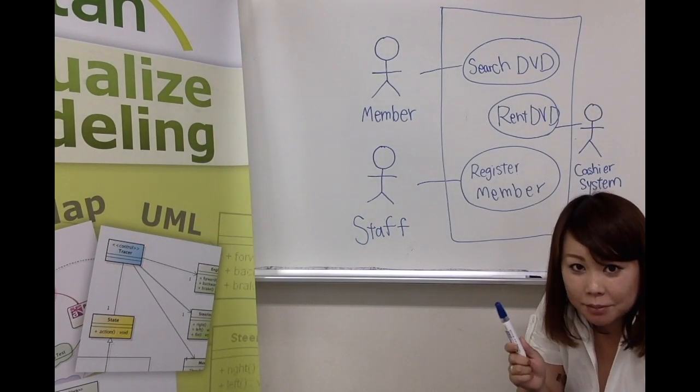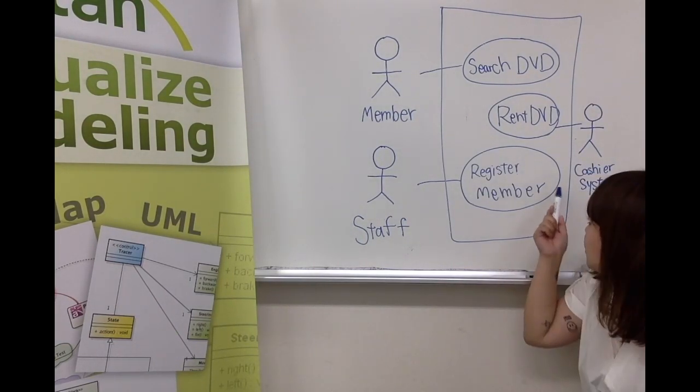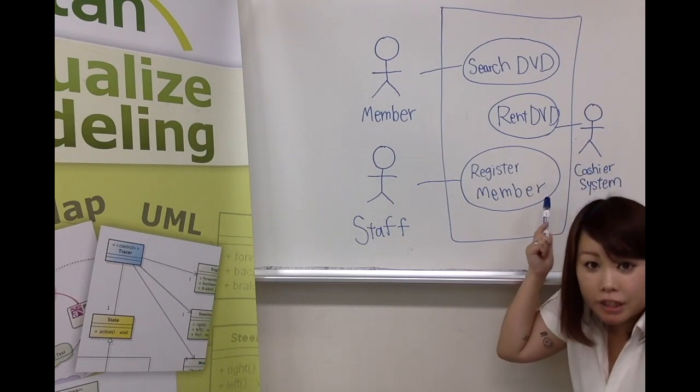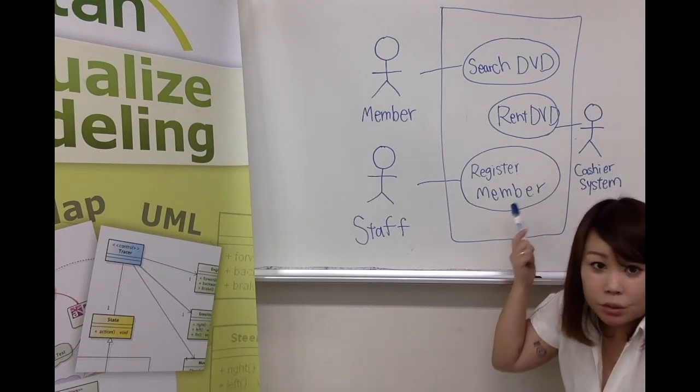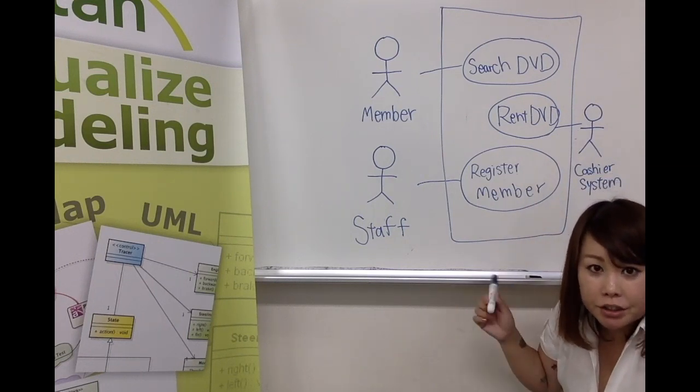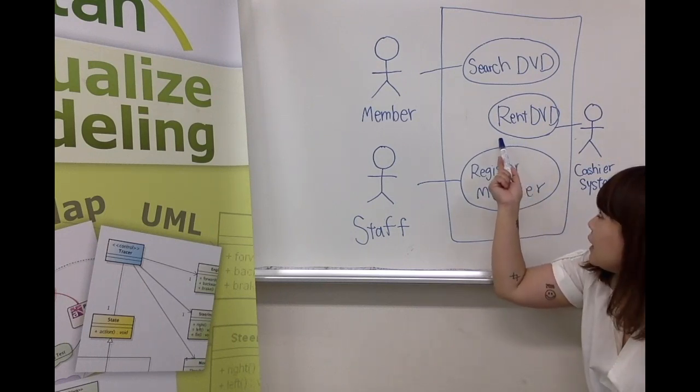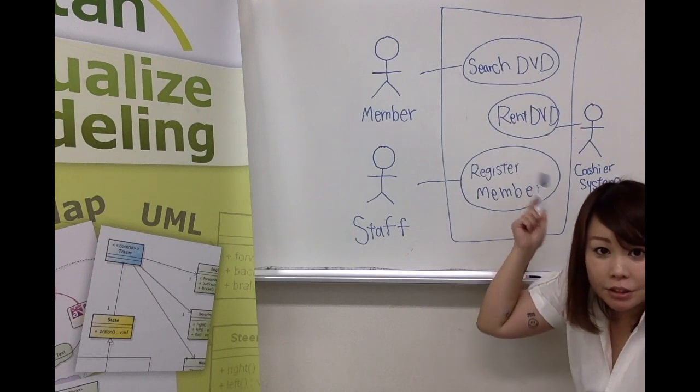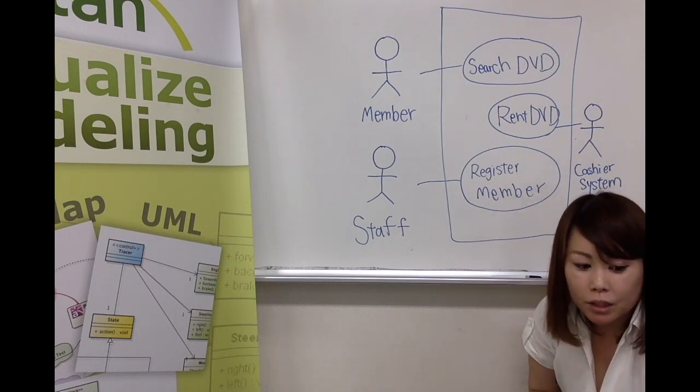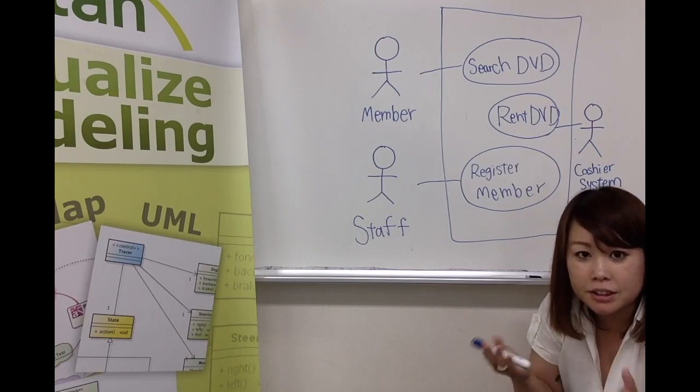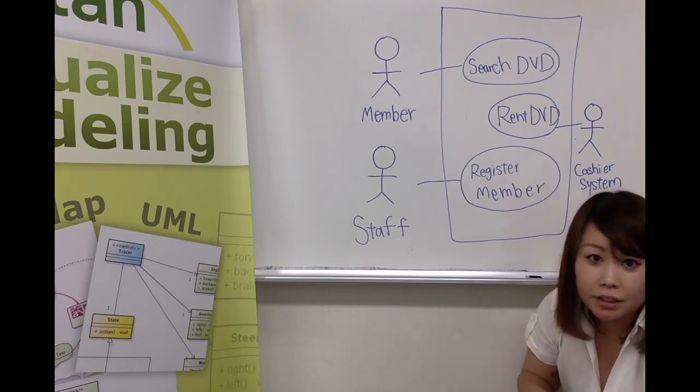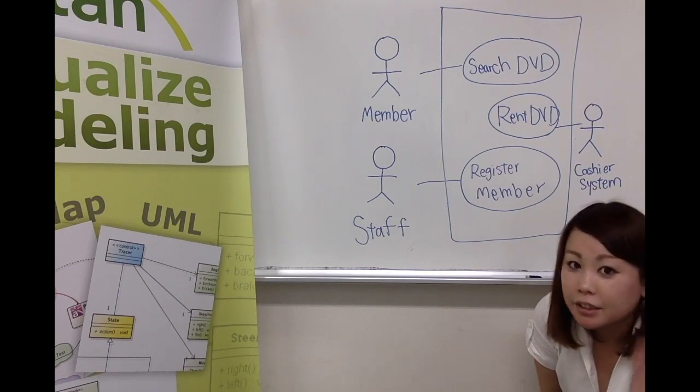There is another type of actor, which is shown here called cashier system, which is not a human or user, but is a system that participates into this rent DVD use case. So what I wanted to mention here is that non-human external system can also be an actor in use case diagram.